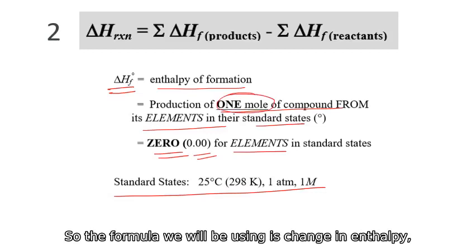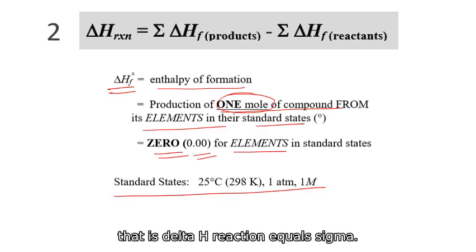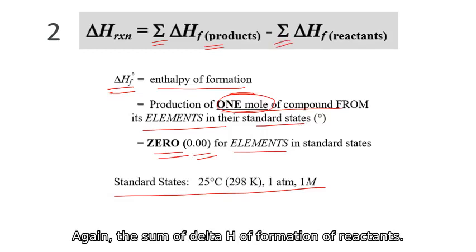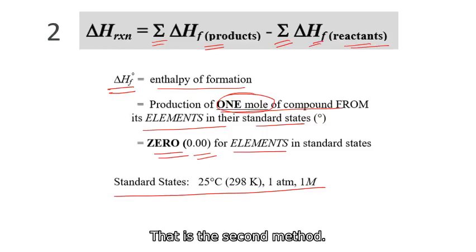So the formula we will be using is change in enthalpy. That is delta H reaction equals sigma, the sum of delta H of formation of products minus sigma, the sum of delta H of formation of reactants. That is the second method.